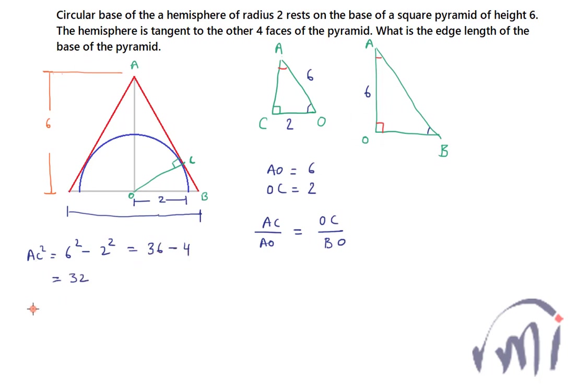So AC squared is 32, that means AC is equal to square root of 32, and this will be equal to 4√2. So AC is 4√2.